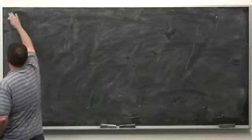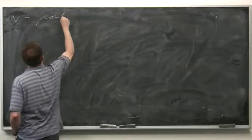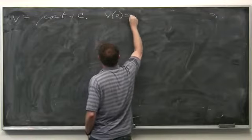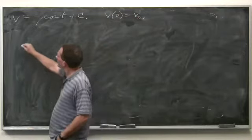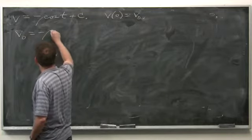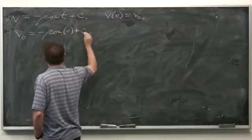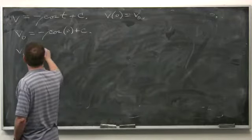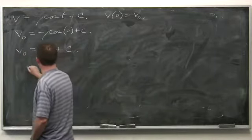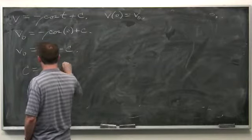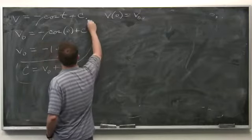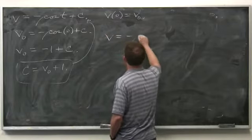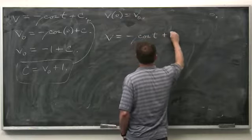The velocity is minus cosine of t plus a constant c. We plug in the tautological initial data: at time zero, velocity is v₀. So v₀ equals minus cosine of 0 plus c. Cosine of 0 is 1, not 0, so this gives v₀ equals minus 1 plus c, meaning c equals v₀ plus 1.